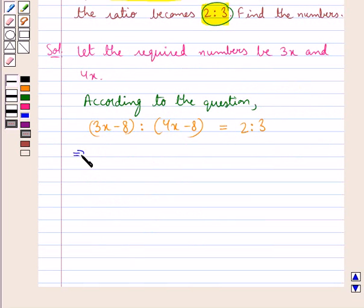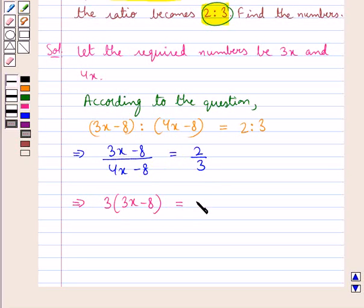This means 3x minus 8 upon 4x minus 8 equals 2 upon 3. Now cross multiplying, we get 3 multiplied by 3x minus 8 equals 2 multiplied by 4x minus 8. This gives us 9x minus 24 equals 8x minus 16.